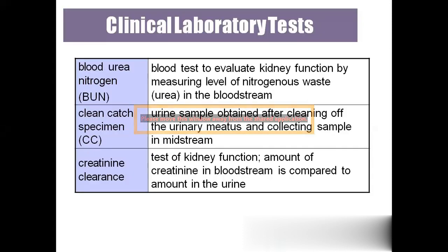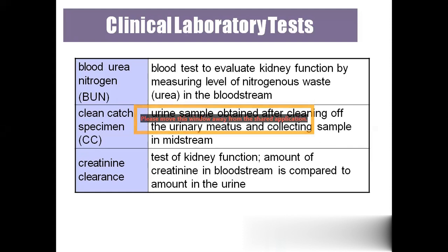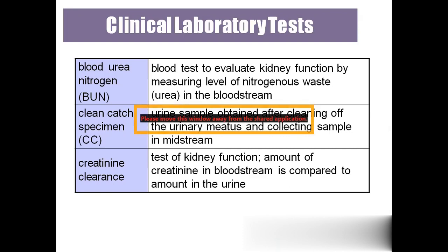Clinical laboratory tests: Blood Urea Nitrogen (BUN) — if there is a problem with urination, the physician orders this test. Blood is taken and the amount of nitrogenous waste in the blood is measured to confirm whether the kidneys are working properly. If the kidneys are failing, they cannot filter the nitrogenous waste, so it accumulates in the blood.